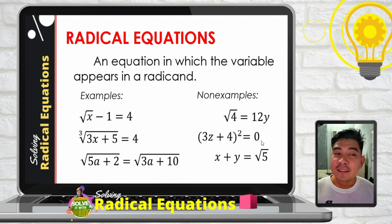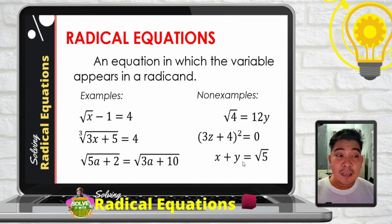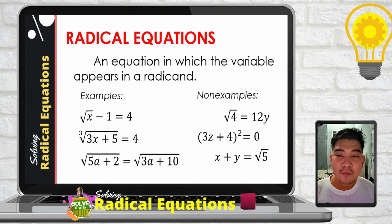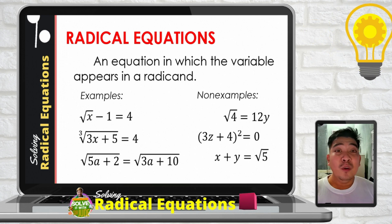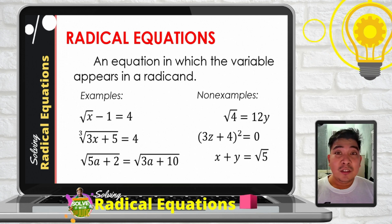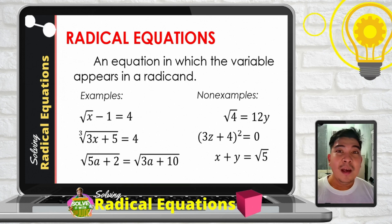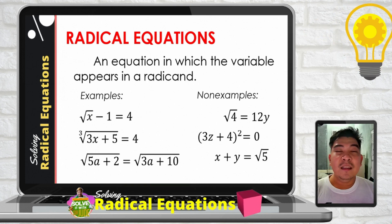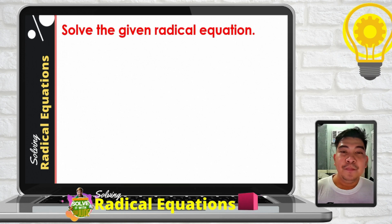The last non-example is x plus y equals the square root of 5. Now, how do we solve radical equations? There are 3 steps to follow. Let us begin with example number 1.